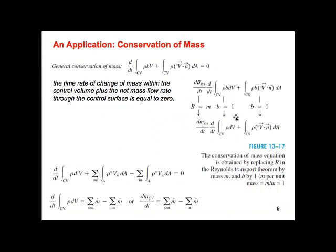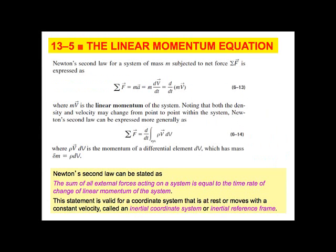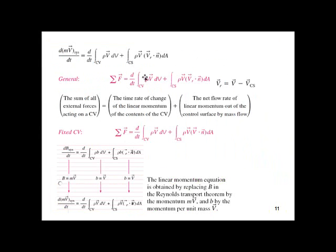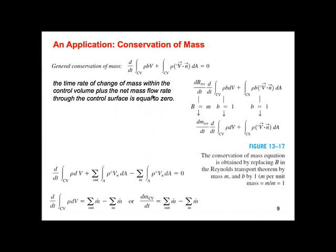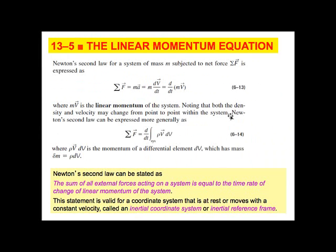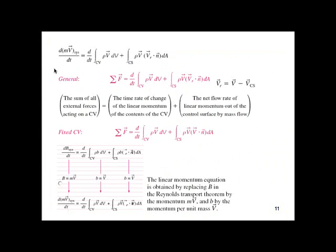So likewise, we can substitute now MV for our momentum. So this is DMV, little b would be just V, and we could plug that into here and obtain our conservation of momentum. So let's go to the conservation of momentum equation, which is here. So you guys see that we could just plug in using our Reynolds transport theorem. Now we have our general conservation of momentum equation. Let's get that out of here. So here, this is what you guys need to know.